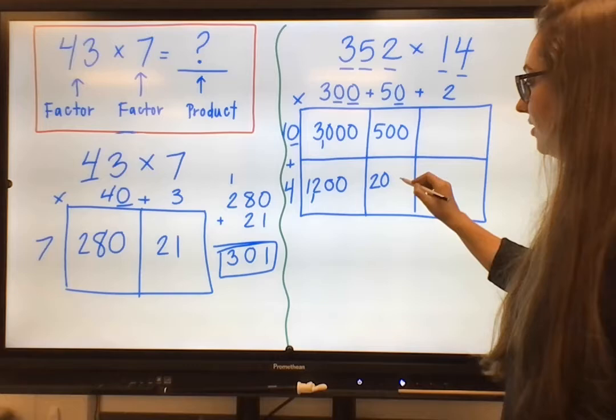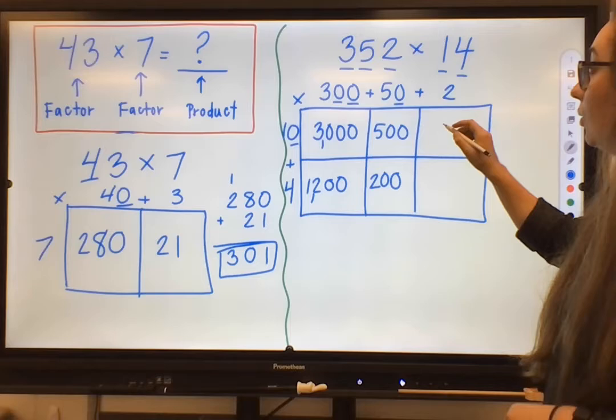Same method all the way through. 5 times 4, 20. I have 1 zero to add to the end. So 4 times 50 is 200.